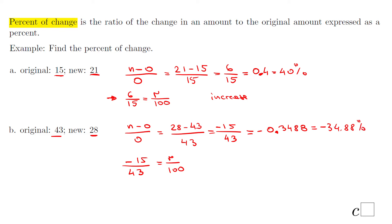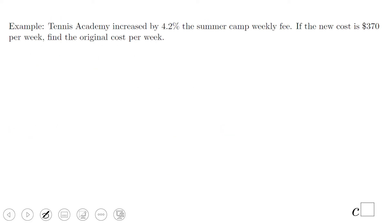So the decrease here is 34.88 percent. An application of percent of increase or decrease is, for example, this problem. We have a real life application. Tennis Academy increased by 4.2 percent the summer camp weekly fee. If the new fee is $370 per week, find the original cost per week.